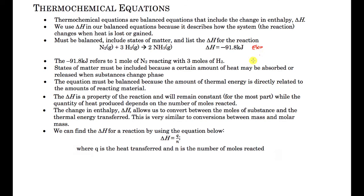This tells us that for every one mole of nitrogen that reacts, we get this amount of heat. If three moles of hydrogen react, we get this amount of heat — 91.8 kilojoules of energy every time three moles of hydrogen react with one mole of nitrogen. This might sound familiar — it's a lot like stoichiometry. When ammonia is produced, not only do we make ammonia gas, but we also produce heat, and the amount of heat is connected to the amount of reactants.